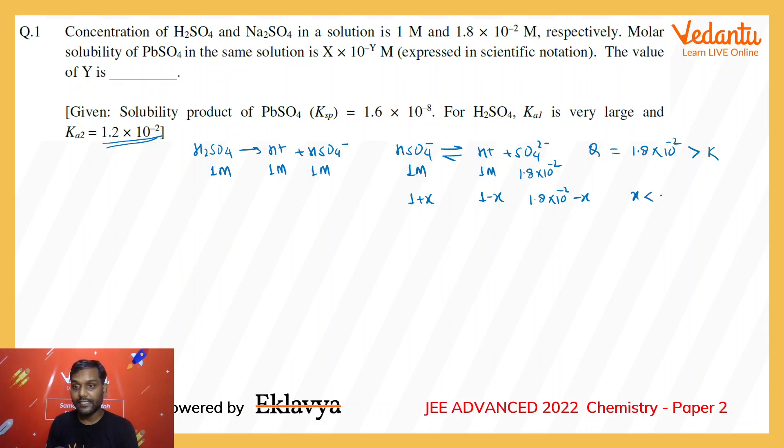Because x is less than 1.8 × 10^-2, that is 0.018, I can safely neglect that with respect to 1. So the H+ concentration in the solution would be approximately 1 and HSO4- also will be approximately 1.